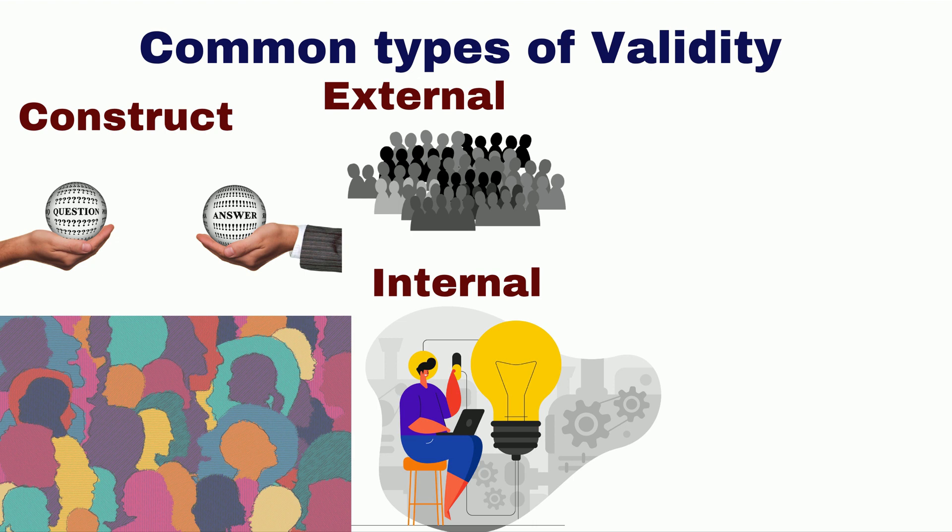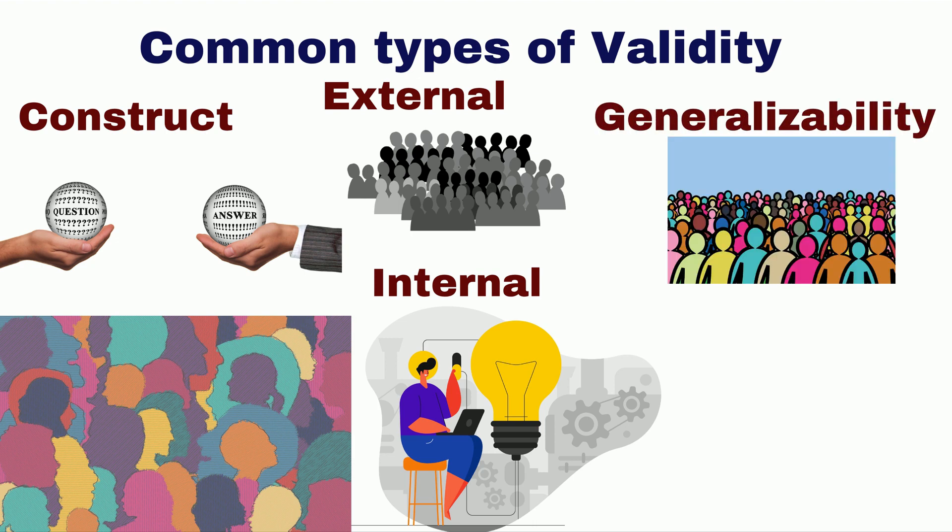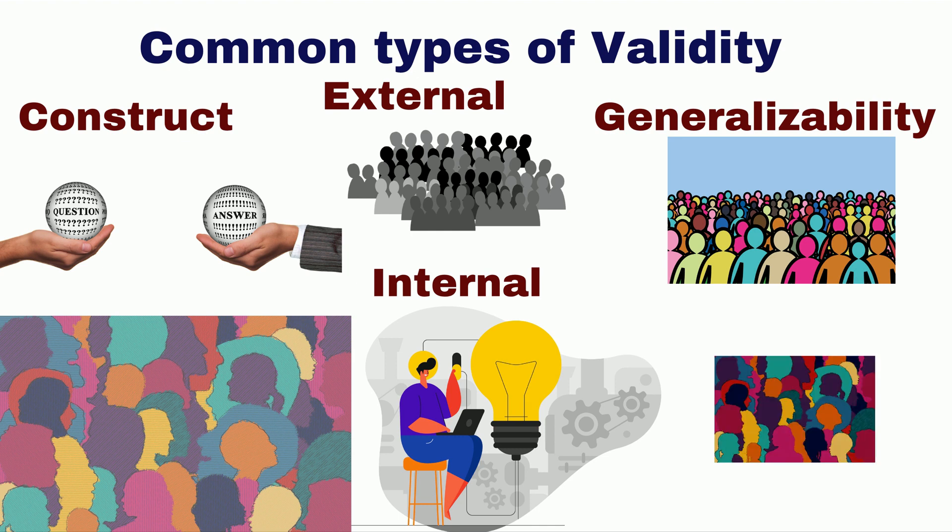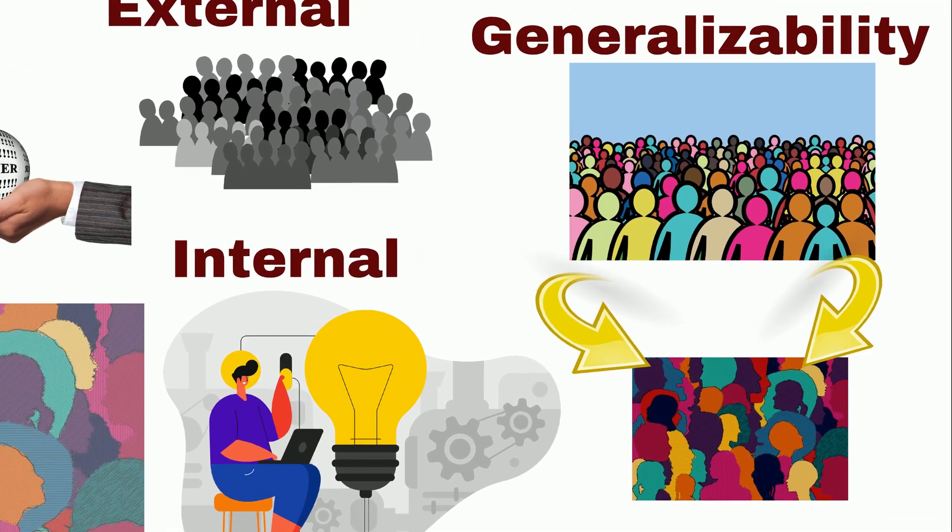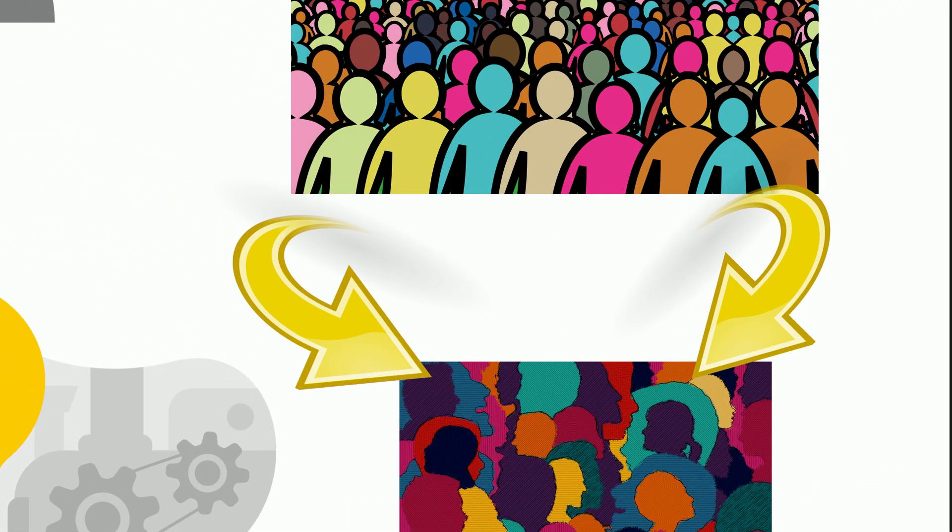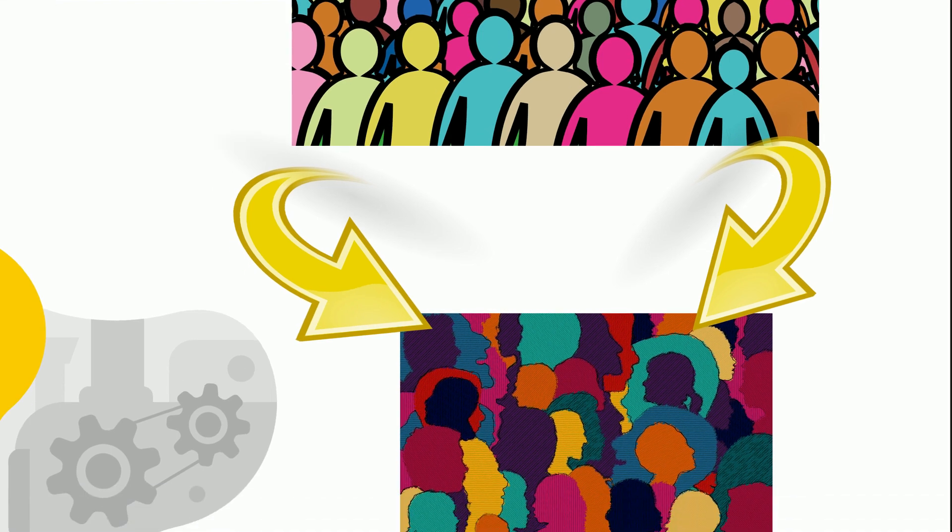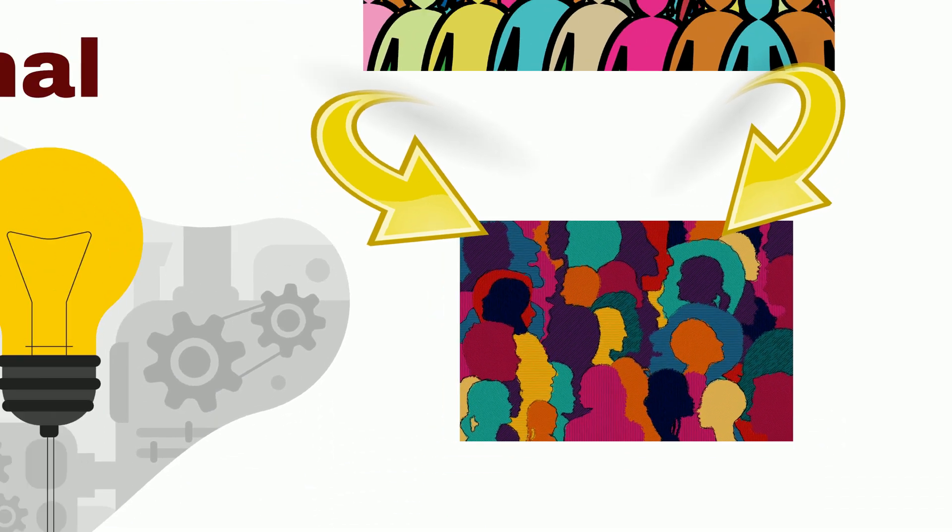The last quality measure of quantitative research is generalizability. For example, voices of British women about women empowerment are accurately captured and represent the opinions of whole population group. If 70% of the sample is emotionally intelligent, 70% of the population is assumed to be emotionally intelligent.